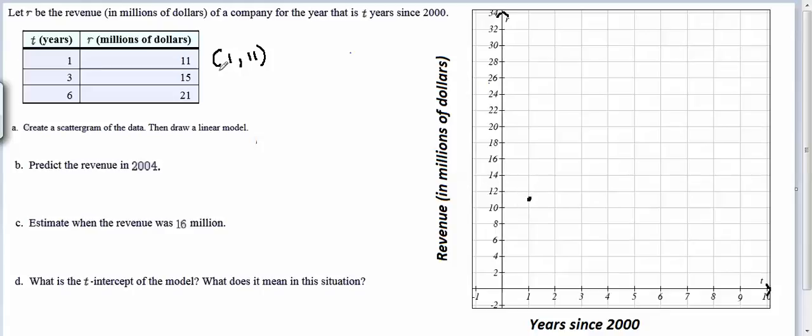Our next ordered pair we need to graph is 3, 15. So my t value, the year since 2000 is 3, my revenue or my dependent variable has a value of 15 so I'm going to go up and put that dot right between 14 and 16 at 15.